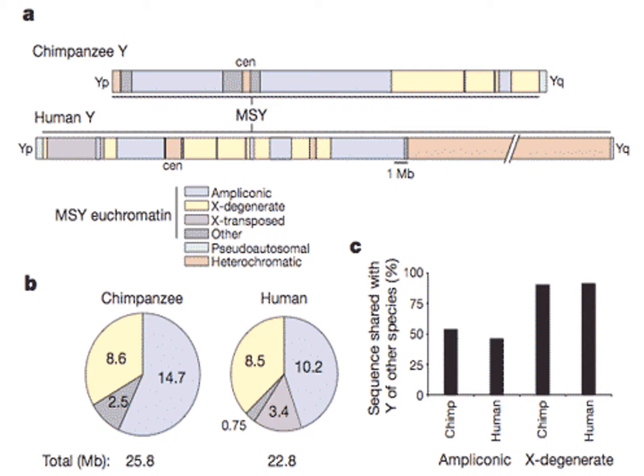However, since each respective Y chromosome appears fully integrated and interdependently stable within its host organism, the most logical inference from the Y chromosomal data without any prior commitment to the evolutionary story of origins is that humans and chimpanzees were each specially created as distinct creatures, or evolved over a far, far greater period of time.